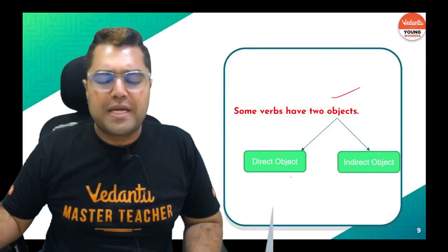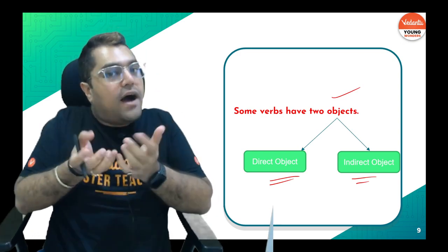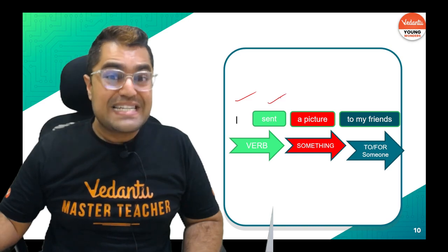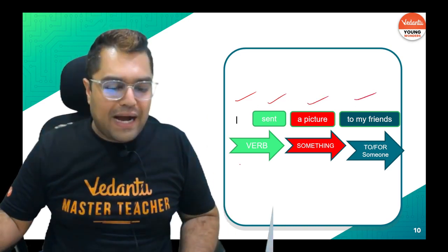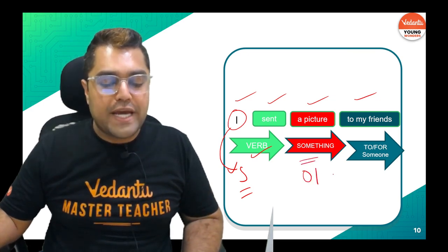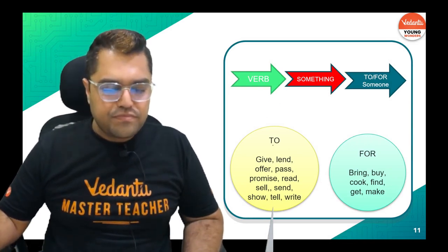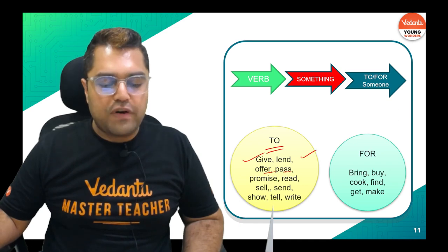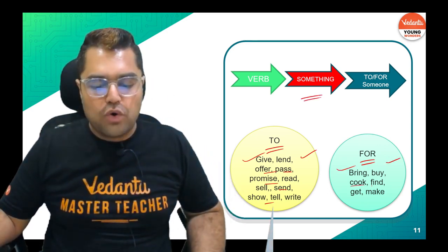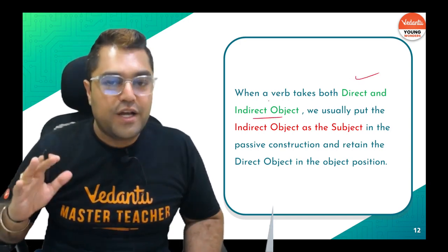Now, two objects — there are two types: direct and indirect. The subject is the doer; the object is the receiver. There are verbs that take two objects, such as: to give, lend, offer, pass, promise, send, show, tell. Then there are verbs used with 'for' — bring, buy, cook, find, get, make. You don't have to memorize this; you just need to understand it.